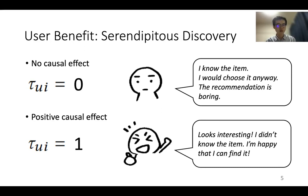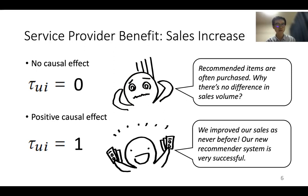On the other hand, if there's a positive causal effect, a user might feel: looks interesting, I didn't know the item, I'm happy that I can find it. For a service provider, it can lead to an increase of sales. When there's no causal effect, a service provider might get into trouble — recommended items are often purchased, while there's no difference in sales volume. But if there's a positive causal effect: we improved our sales as never before, our new recommendation system is very successful.